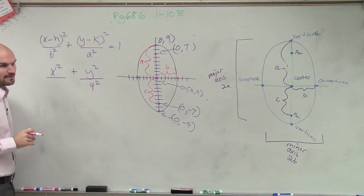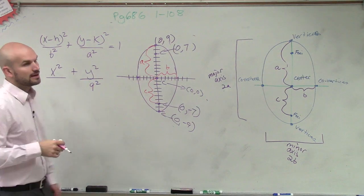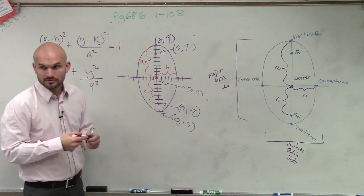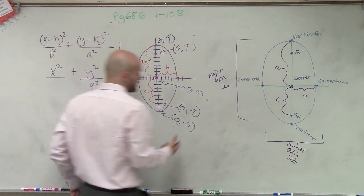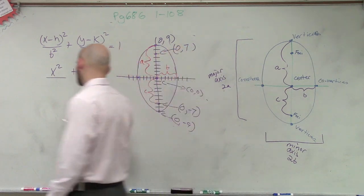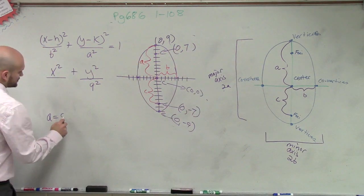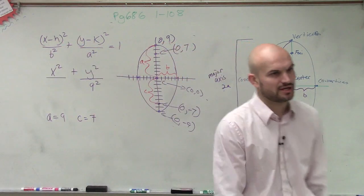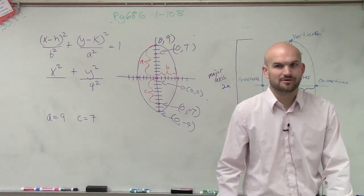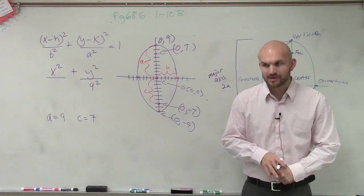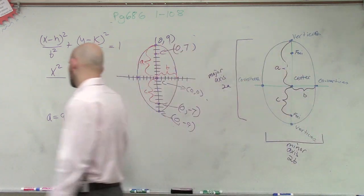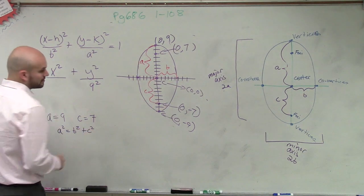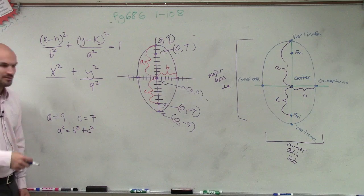But do we know what b squared is yet? No. But do we know what c is? c is equal to 7. So if I know that a is equal to 9 and c is equal to 7, do you guys remember that formula that I gave you, how a, b, and c all relate to each other? It says that a squared equals b squared plus c squared. Kind of like the Pythagorean theorem, but a little bit different.